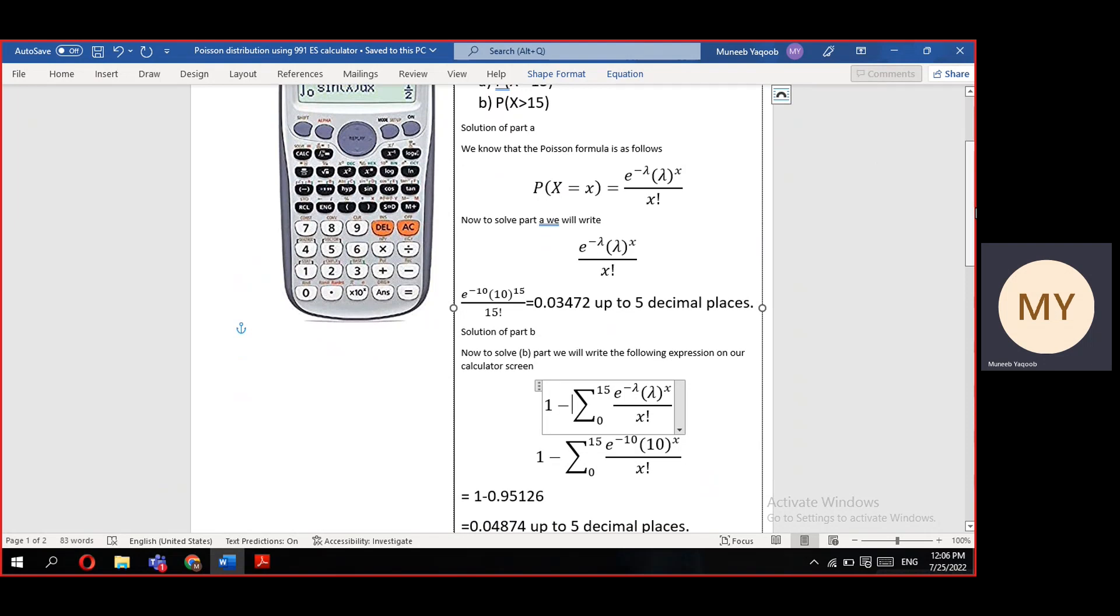we will write it as probability of X greater than 15 equals 1 minus probability of X less than or equals to 15. To calculate probability of X less than or equals to 15, we need to calculate all probabilities from X equals 0 till X equals 15.